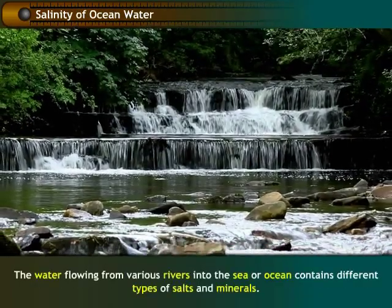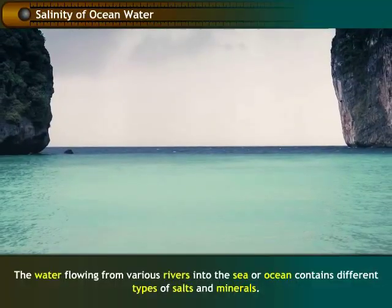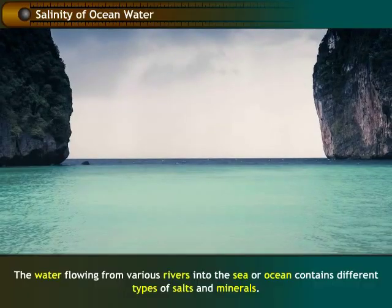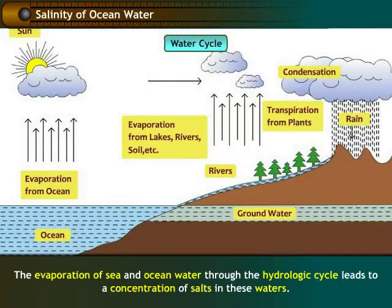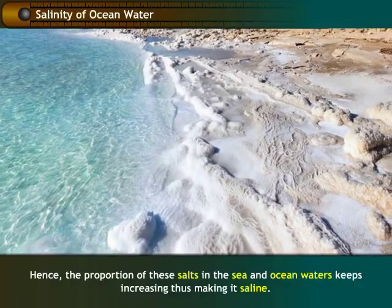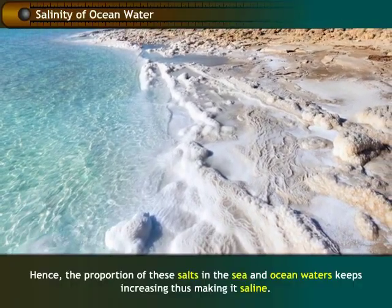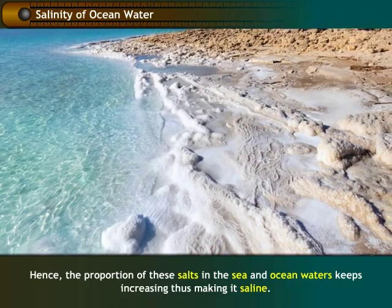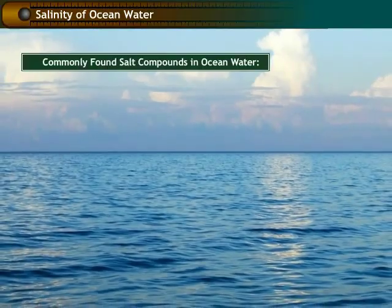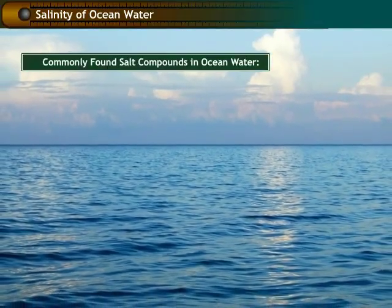The water flowing from various rivers into the sea or ocean contains different types of salts and minerals. The evaporation of sea and ocean water through the hydrologic cycle leads to a concentration of salts in these waters. Hence, the proportion of these salts in the sea and ocean waters keeps increasing, thus making it saline. The most commonly found salt compounds in ocean water are sodium,